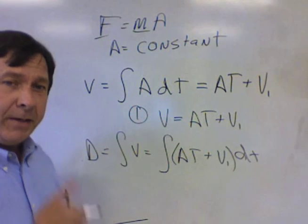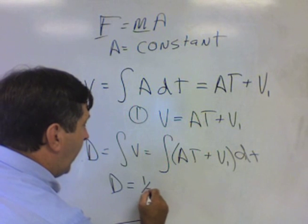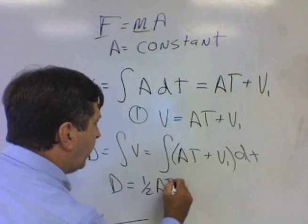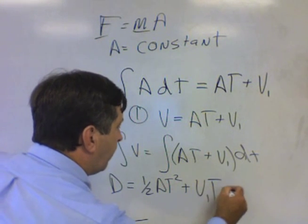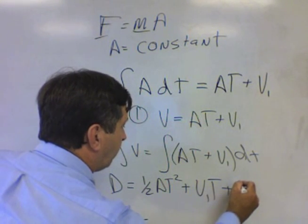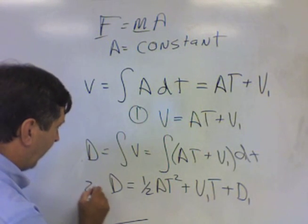If we take that integral, we're going to find that d equals one-half At squared plus v initial T plus d initial. This is our second kinematics equation.